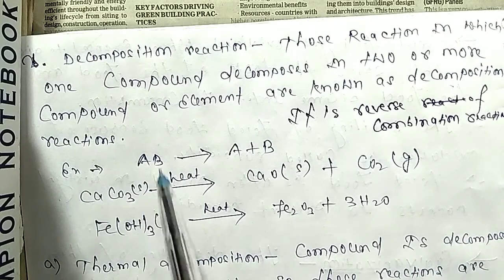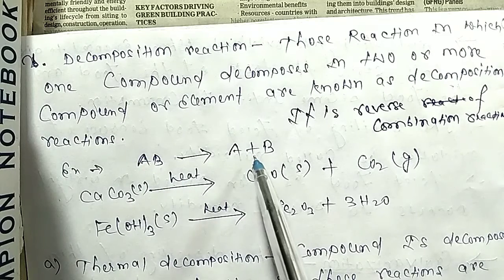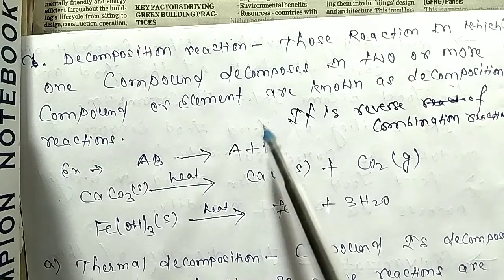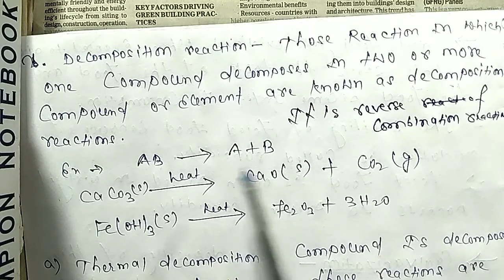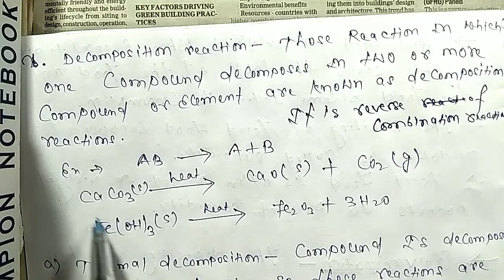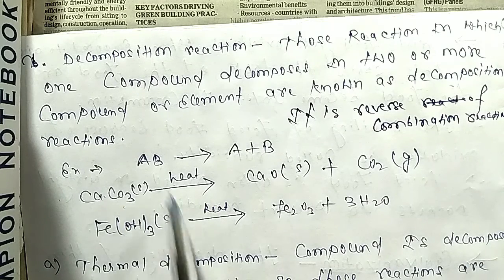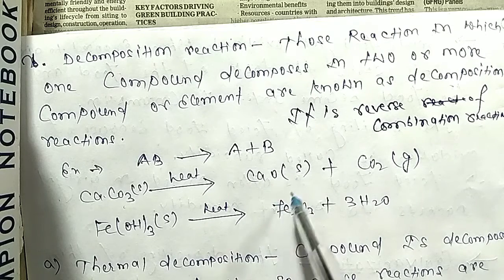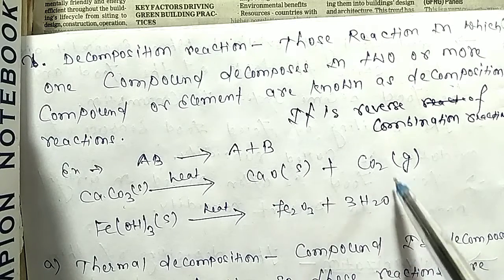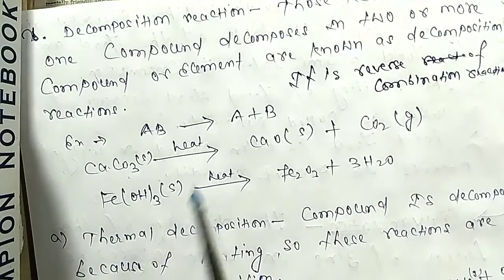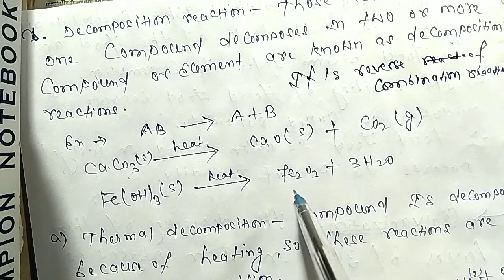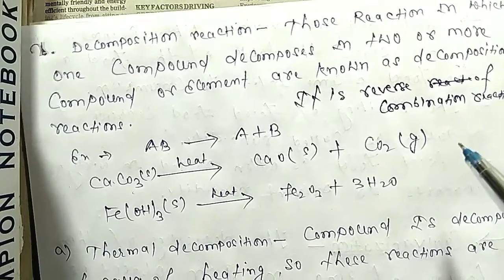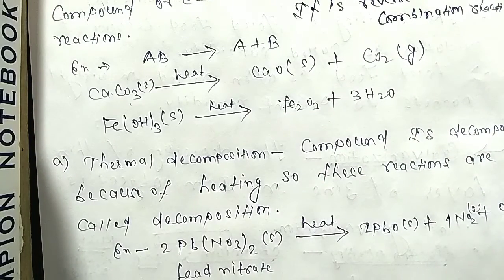When a single compound decomposes into two or more elements, that is decomposition. For example, CaCO₃ (calcium carbonate) decomposes into calcium oxide plus CO₂ gas.